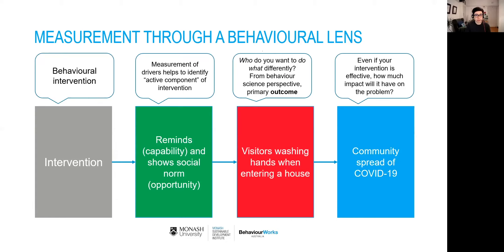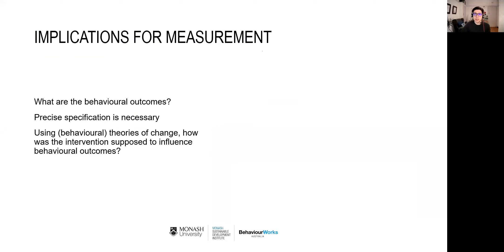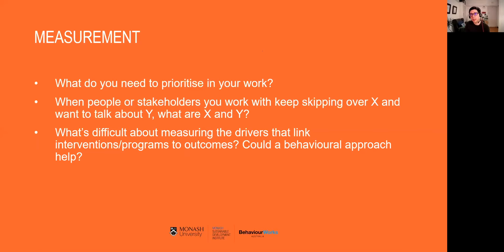Some implications for measurement I'd recommend you consider: think about what are the behavioral outcomes that you care about. When thinking about the questions you're posing, who needs to act differently? Reflecting on the idea that precise specification is really necessary, and also thinking about — if you have a behavioral theory of change — how was the intervention supposed to influence behavioral outcomes in addition to utilization, cost, and other types of questions you care about? There's great activity in the chat, so Jess went ahead with more questions.